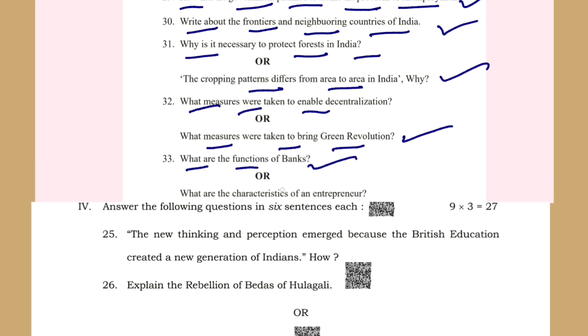What were the measures taken to bring about the Green Revolution? What are the functions of banks? What are the characteristics of an entrepreneur? Functions or characteristics of banks are fixed questions, and functions or characteristics of entrepreneur are also fixed.